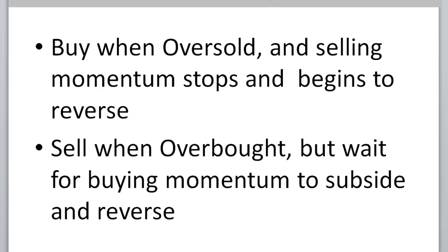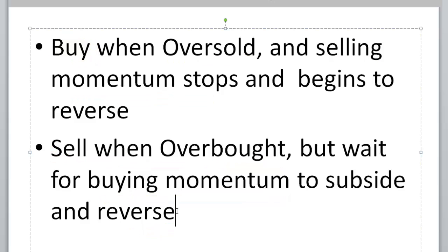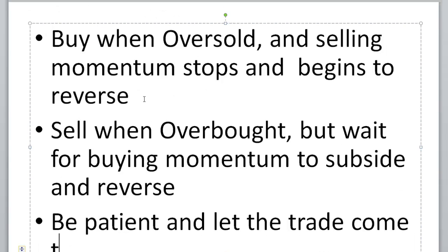So a very quick summary: we want to be buying when our RSI tells us it's oversold, but only when the selling momentum stops. Similarly, we want to be shorting when RSI tells us it's overbought, but we're going to wait until that initial buying momentum goes away and it begins to reverse. It's a patient trade. The meat of this entire strategy is to be patient and let the trade come to us. A big mistake many traders make in the beginning is chasing after trades — in this strategy, we're going to be patient and let the trades come to us.